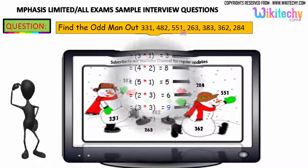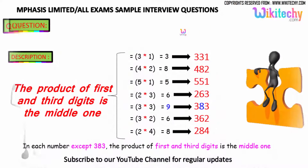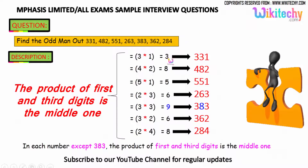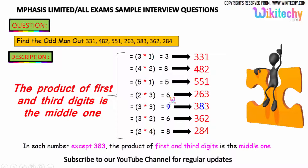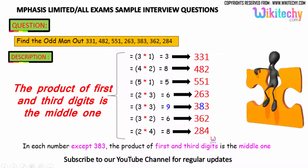Okay, that is the answer. So: 331 — 3 into 1 is 3. 482 — 4 into 2 is 8. 551 — 5 into 1 is 5. 263 — 2 into 3 is 6. 383 — 3 into 3 is 9. 362 — 3 into 2 is 6. 284 — 2 into 4 is 8.